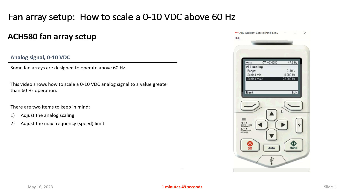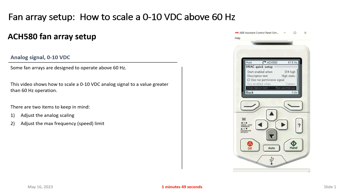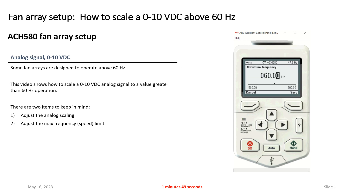And there you go. Now you probably think I'm done — 0 to 10 volts equals 0 to 72 hertz. Well, I'm half done. What I just took care of right there is the scaling from the automation system to the drive, to make sure the drive knew what it was supposed to do based on the analog signal coming in. However, drives also have limits in them. A typical factory default on a drive is going to be 60 hertz limit here in the US. You see this maximum frequency: 60 hertz. So now I need to change that limit on my maximum frequency to also be 72 hertz.